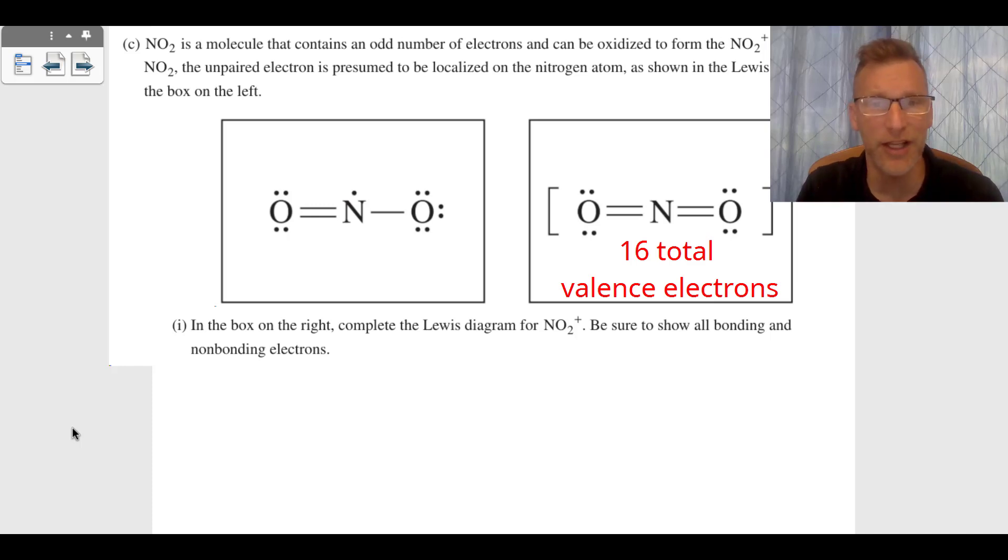Six times two is 12, 12 plus five is 17. But that plus one means we lost an electron, which means we only have 16 total valence electrons. You do single bonds on the outside with the nitrogen and the oxygen, you get octets on the oxygen. You have to borrow, and it looks a lot like carbon dioxide.